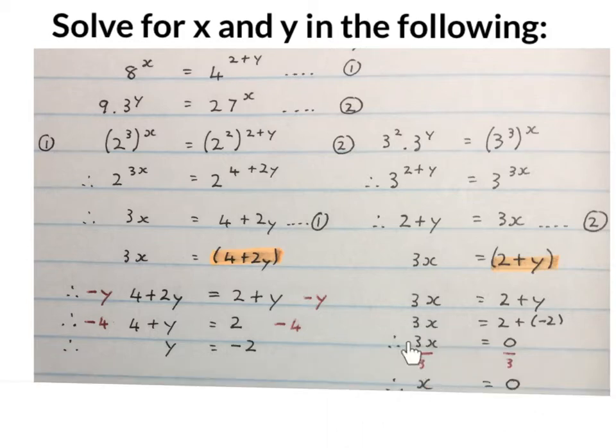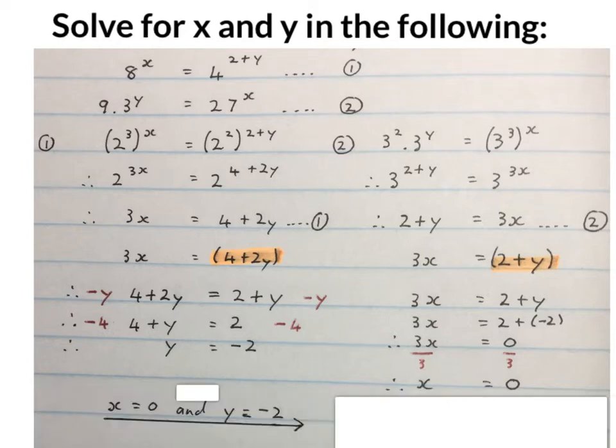The final answer is Y equals -2 and X equals 0. You could have stopped here, but I like to write X equals 0 and Y equals -2. This simultaneous equation is finished. Now you can check it if you're inquisitive.